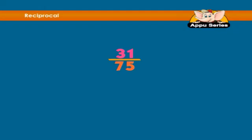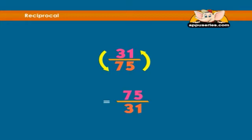Example: find the reciprocal of 31 over 75. We switch the numerator and denominator to find the reciprocal: 75 over 31.